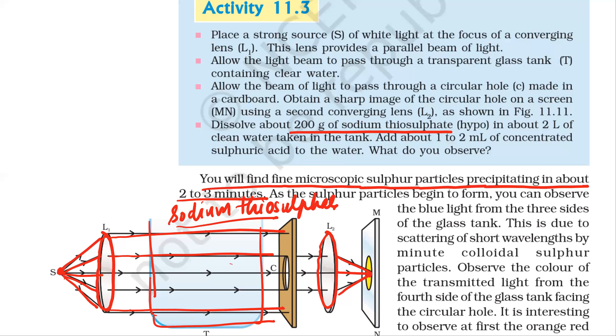After 2 to 3 minutes, fine sulfur particles will be seen in the tank. As sulfur particles begin to form, you can observe blue light from three sides of the glass tank. If you view from this side, the front side, or from the top, you will see blue color.